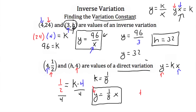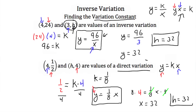We have 4 equals 1/8 times x. To get x alone, I need to multiply both sides by 8. The 8 and 1/8 cancel, and we find x is equal to 32, which means h is equal to 32. So finding the variation constant — whether for an inverse or a direct variation — is basically the same steps: plug in a point and solve for k. Once you have k, you can use the equation to solve for any other location on the function.